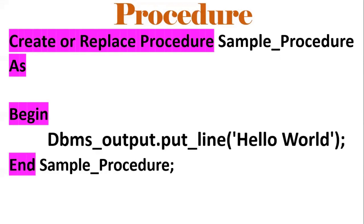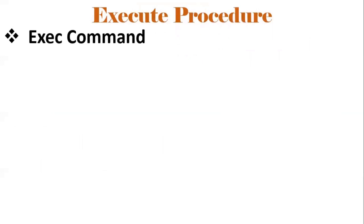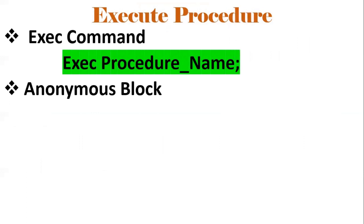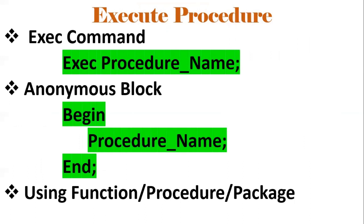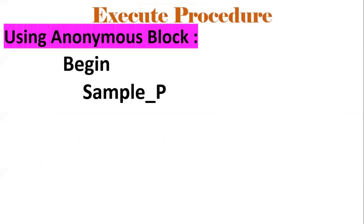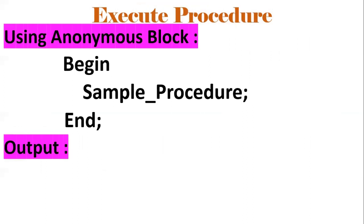Here is a simple Hello World PL/SQL procedure. The syntax is: CREATE OR REPLACE PROCEDURE followed by the procedure name, then AS, BEGIN, and END, with the execution block in between where we write our business logic. There are several ways to execute a procedure: using EXEC procedure_name, using an anonymous block, or calling the procedure from within another procedure, function, or package. Using an anonymous block with BEGIN sample_procedure; END; we get the output 'Hello World', printed via DBMS_OUTPUT.